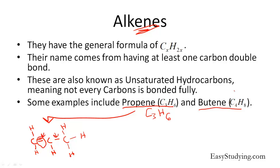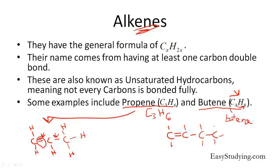Same thing with butene. We know this is butene because, going back to the prefixes, four means but-. Since four multiplied by two gives eight hydrogens, we know this is part of the alkene group, so we add -ene at the end — butene. The structure for butene consists of a double-bonded carbon atom connected to another carbon, and then two more single-bonded carbon atoms — four total. We have eight hydrogens: the first double-bonded carbon gets two hydrogens to reach its maximum of four bonds, the next carbon gets one more, and the final carbon gets three more, filling them all in with hydrogen atoms.